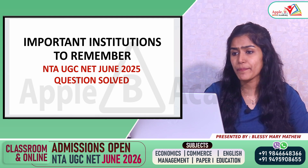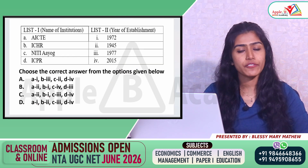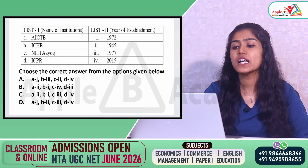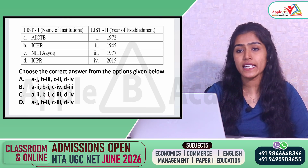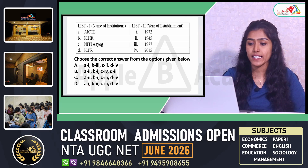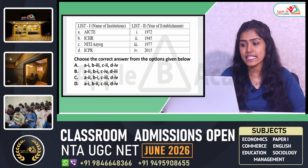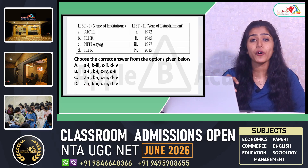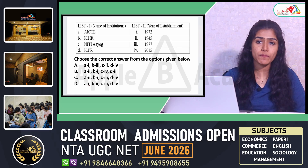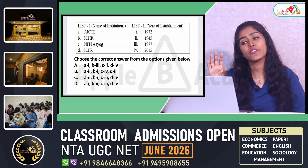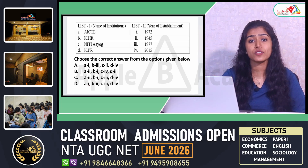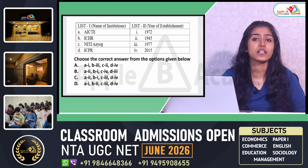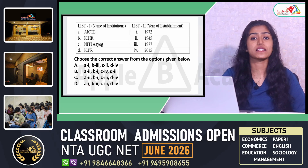The question was a match-the-following type wherein they have given different names of institutions in List 1 and List 2 was basically the year of establishment. So in List 1 we have AICTE, ICHR, NITI Aayog and ICPR, and in List 2 we have the years 1972, 1945, 1977 and 2015. These are important institutions you can expect in coming exams, and you have to thoroughly understand the objectives of these institutions, especially for chronologically arranging questions, where you need to know the years of establishment as well.